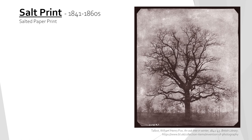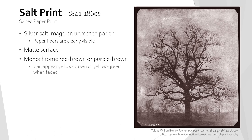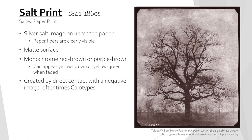Salt prints were also created from 1841 to the 1860s. They consist of a silver salt image on uncoated paper with the paper fibers being clearly visible. Much like the negative, the uncoated paper will have a matte surface. The image is a monochrome red-brown or purple-brown, but they can often appear as a yellow-brown or yellow-green monochrome when faded. Salt prints are created from direct contact with photographic negatives and are generally associated with calotypes.